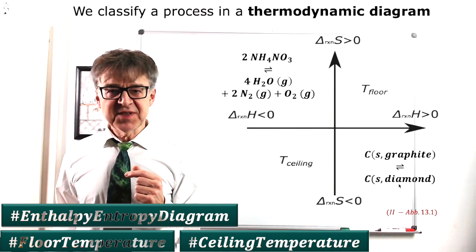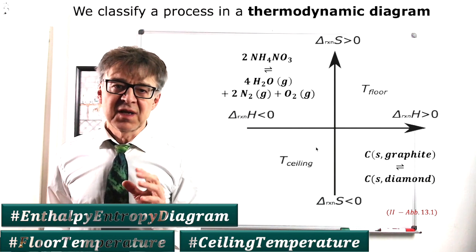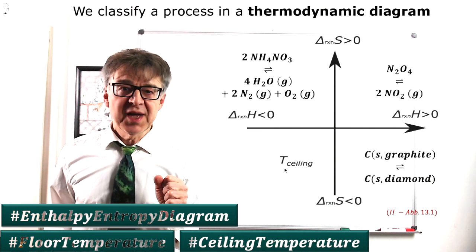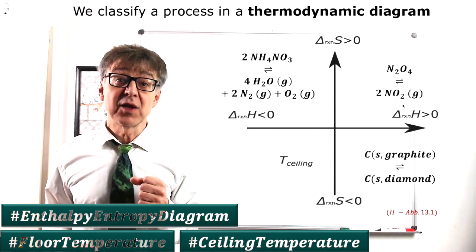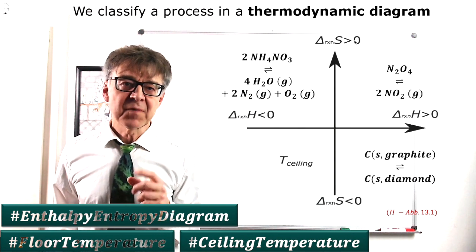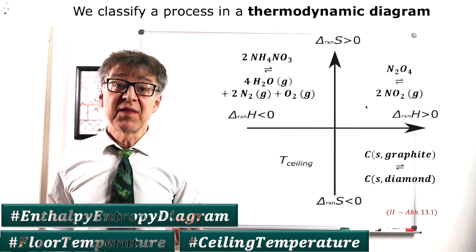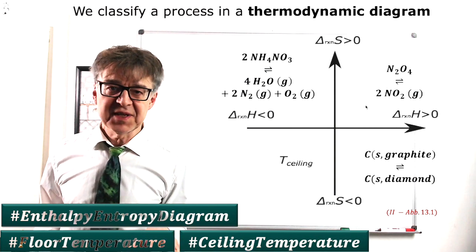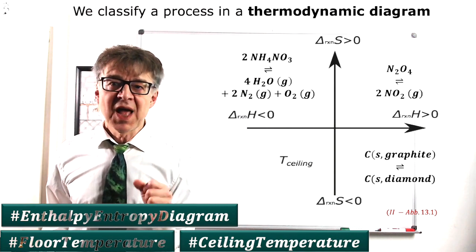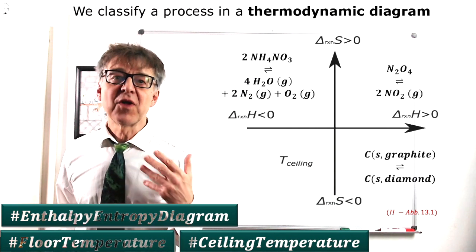For processes in quadrants 1 and 3, temperature is decisive. The decomposition of N2O4 into NO2 is endothermic, energy being not with us, but endotropic, entropy being with us. This means that at low temperatures, where energy has the upper hand, the reaction has no standard affinity, but at a high temperature it does. The temperature at which the sign of affinity changes is called the floor temperature.